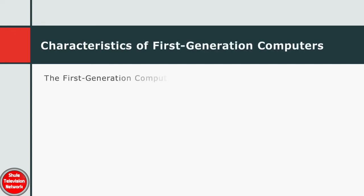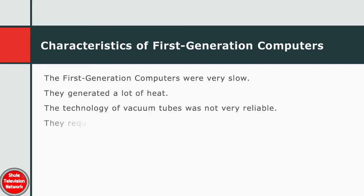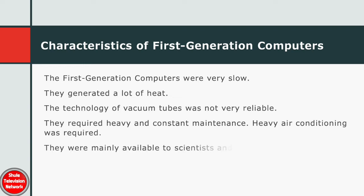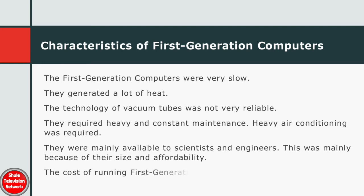The first generation computers were very slow. They generated a lot of heat. The technology of vacuum tubes was not very reliable. They required heavy and constant maintenance. Heavy air conditioning was also required. They were mainly available to scientists and engineers, mainly because of their size and affordability. The cost of running first generation computers was very high.